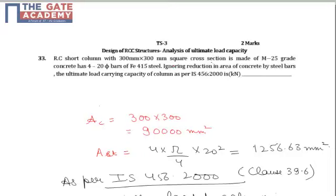Here a reinforced concrete short column of dimension 300 mm square is given and its cross section is made up of M25 grade concrete and 4 bars of Fe 415 steel of 20 mm diameter. The question asks what is the ultimate load carrying capacity of the column as per IS 456-2000, ignoring the reduction in area of concrete by steel bars.